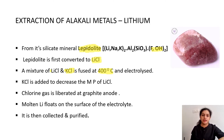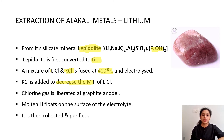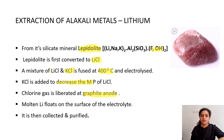KCl is added to decrease the melting point of lithium chloride, since chlorides of alkali metals have very high melting points. Chlorine gas is liberated at the graphite anode — Cl⁻ and Li⁺ ions are present in the fused mixture. Molten lithium floats on the surface of the electrolyte, and is then collected and purified. I'll sketch the schematic representation of the electrolysis chamber.